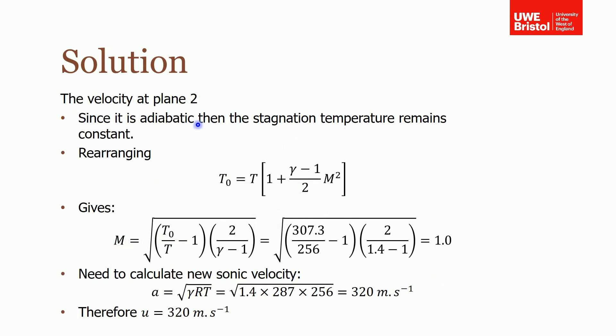For the third part, you're asked to find the velocity at plane 2. You use the same equation, but you need to find M instead of one of the temperatures. What you need to recognize is that because it's adiabatic, the stagnation temperature remains constant throughout the pipe.